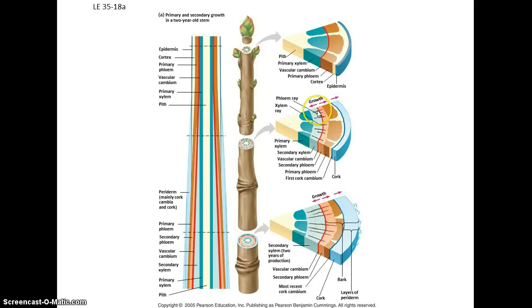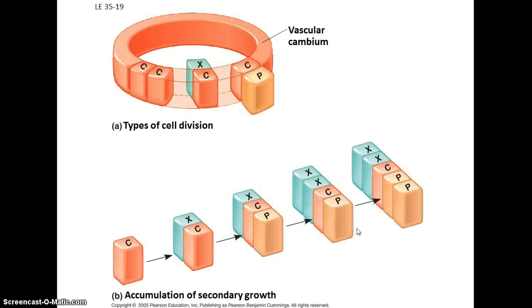So again, here we are with the lateral meristems, the vascular cambium producing xylem vessels to the inside, phloem to the outside. This is what causes the plant to get wider and wider and what causes the growth rings to develop in woody plants. And here's that cork cambium producing cork, the outer layer of the bark.